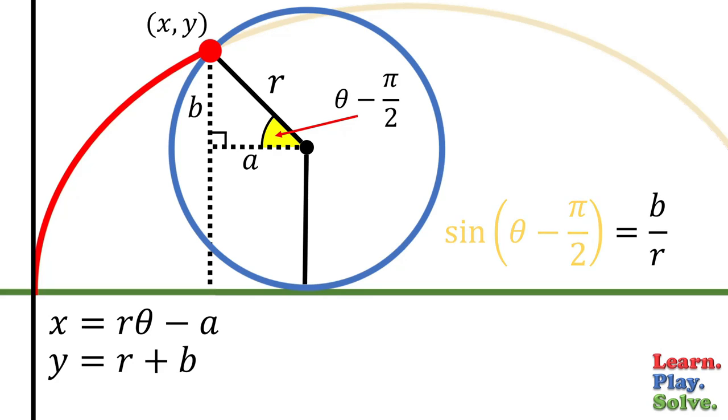That gives us a simpler equation. We can solve for b by multiplying by r. Plug that in, and we have y equals r minus r cosine theta.